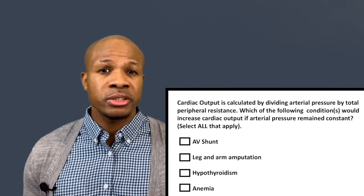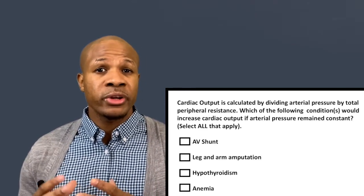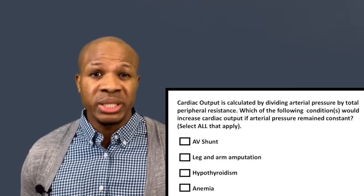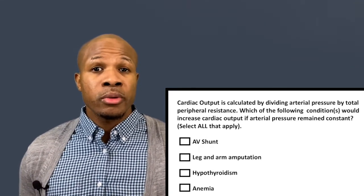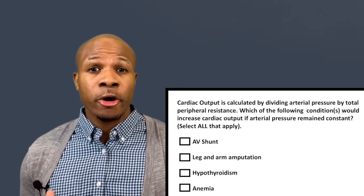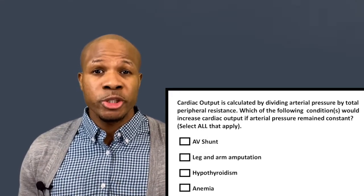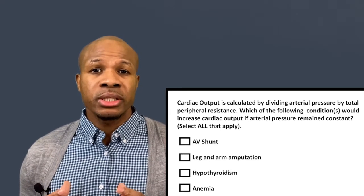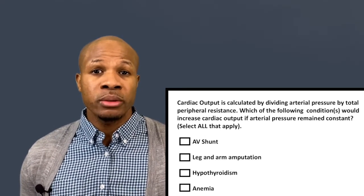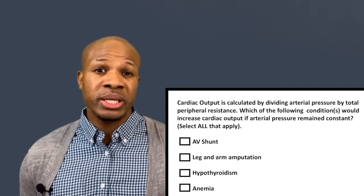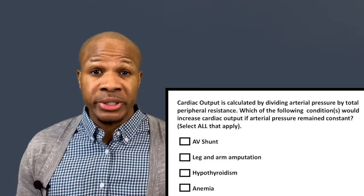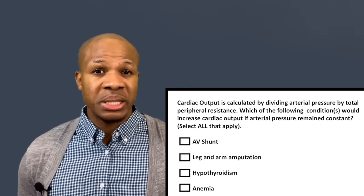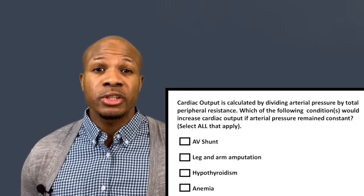In this question we're given different conditions where the pressure remains the same, which means the heart beats just as hard. So if there's going to be a change in cardiac output, it's going to be due to a change in peripheral resistance. We need to look at these conditions and see which ones would decrease resistance, because cardiac output and resistance have an inverse relationship.